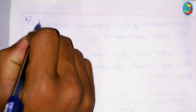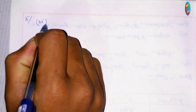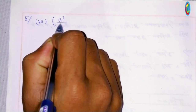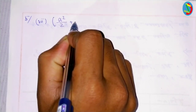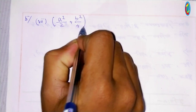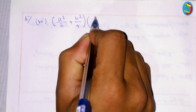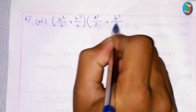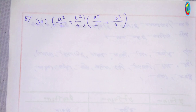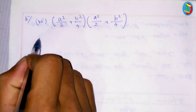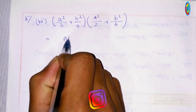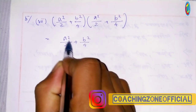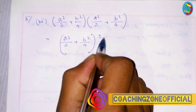So, we have to answer these questions in the comment section. The response is a squared divided by two plus b squared divided by four, whole into a squared divided by two plus b squared divided by four. So, the discussion is a squared divided by 2 plus b squared divided by four, of a squared divided by two plus b squared divided by four.